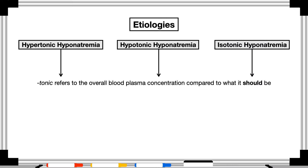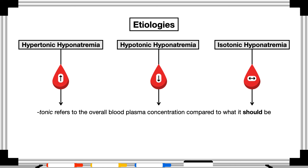Hypertonic hyponatremia is when there's hyponatremia while the overall concentration of the blood plasma is higher than it should be. Hypotonic hyponatremia is when the overall concentration is lower than it should be. Isotonic hyponatremia occurs when the overall concentration remains at a homeostatic level. Hypotonic hyponatremia is the most common, so not only will I spend the most time there, but that is also where I'll begin.